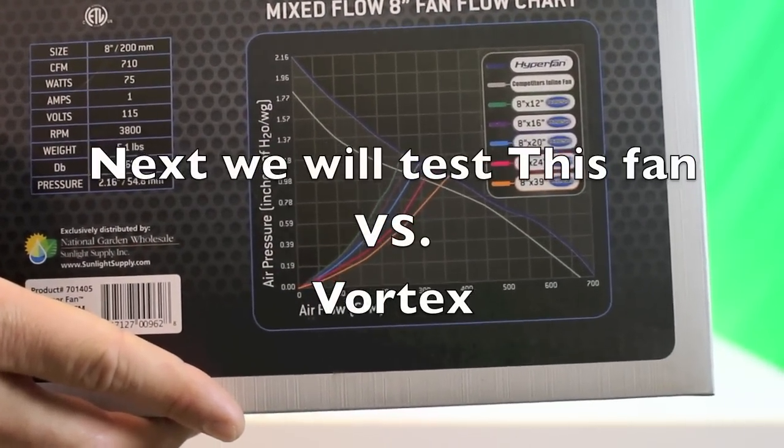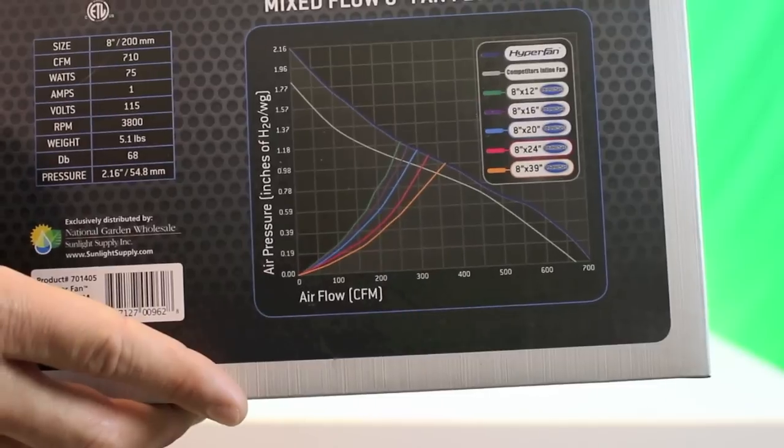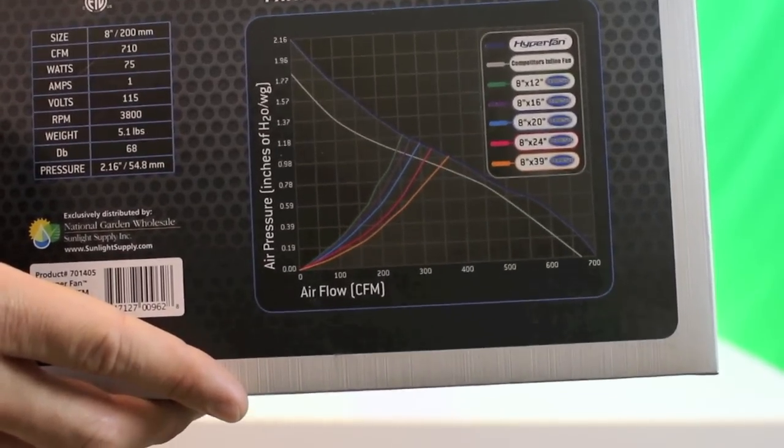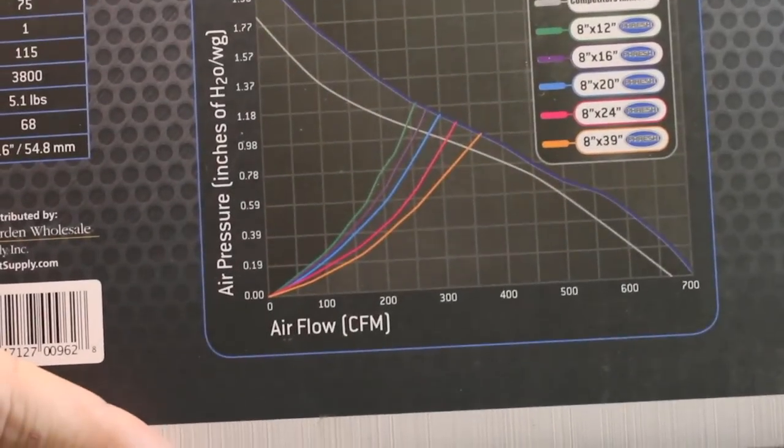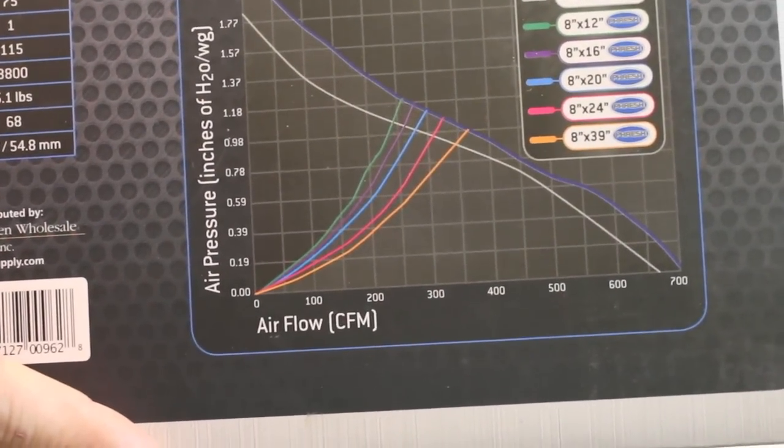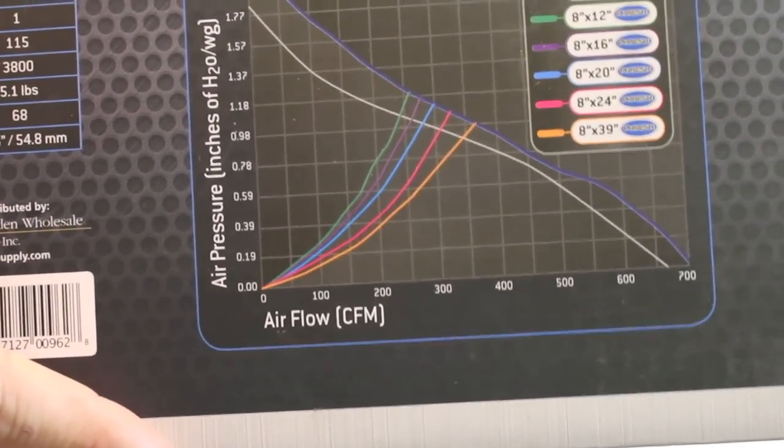So as you can see here with an 8 by 39 inch filter, this fan drops down to about 315 CFM. With an 8 by 24 inch filter, which is probably the most standard that is purchased of the fresh filters in the 8-inch size, we look like we're about...